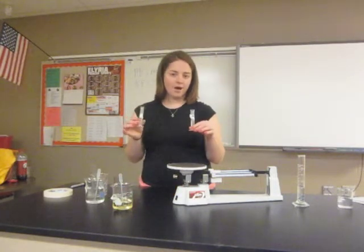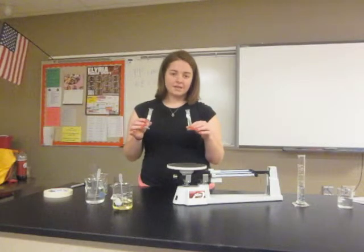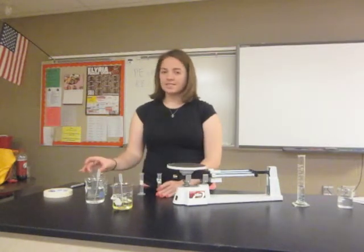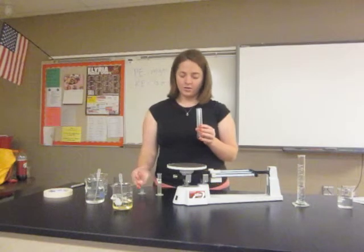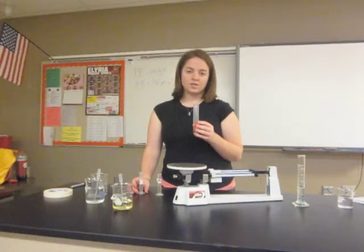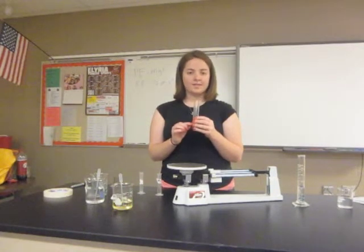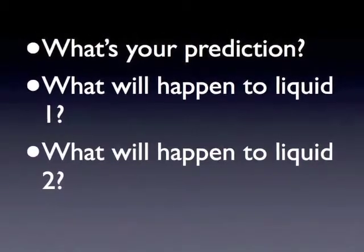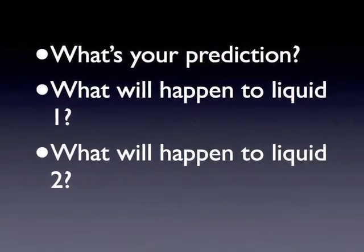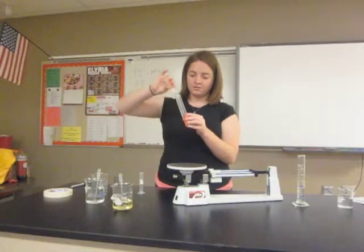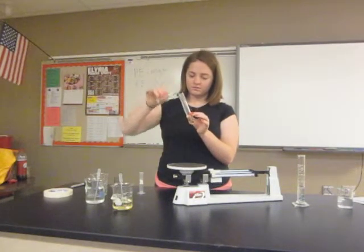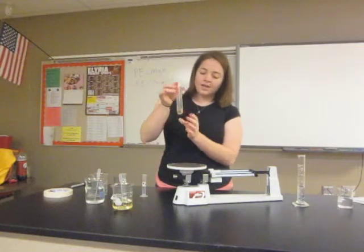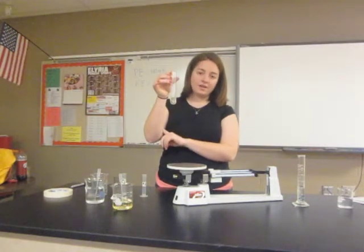Make sure you calculated mass divided by volume for both liquid 1 and liquid 2. Now take a test tube and pour both liquids into it. Before you pour, make a prediction: which liquid will be on the bottom, which will be on top, or will they mix together? Write down your prediction. After pouring both in, you can see that liquid 2 is sitting underneath liquid 1.